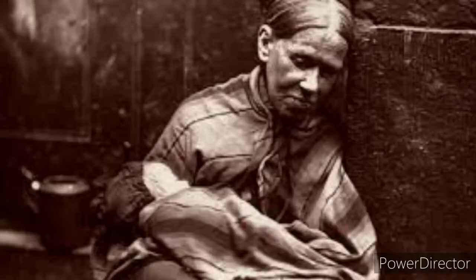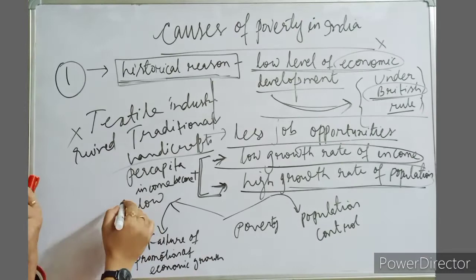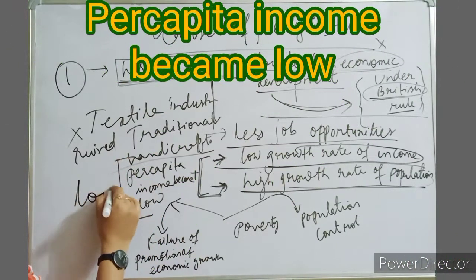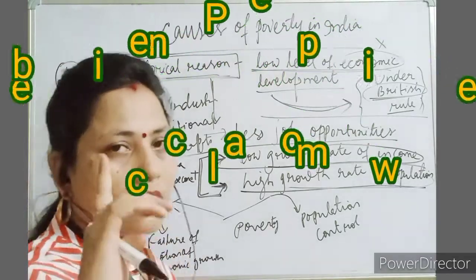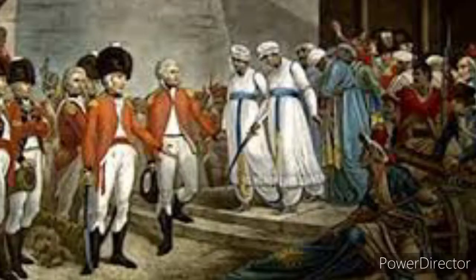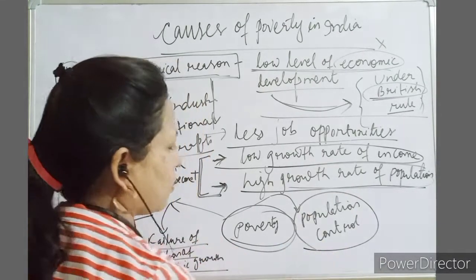Low growth rate of income combined with high growth rate of population resulted in a very low per capita income. In overall, poverty cases were because of failure of promotion of economic growth and population control. We failed in these two aspects during the British rule, which led to the cycle of poverty.